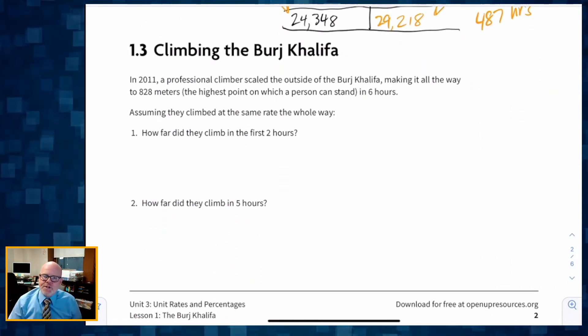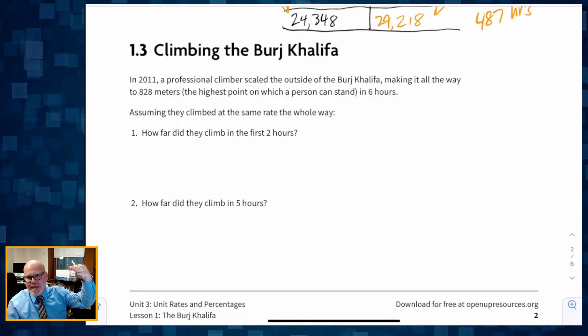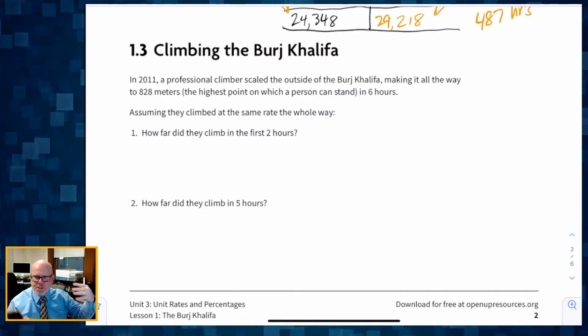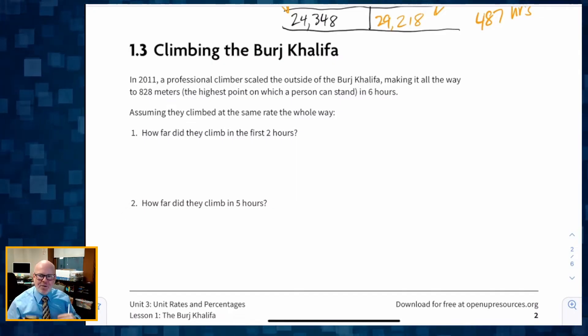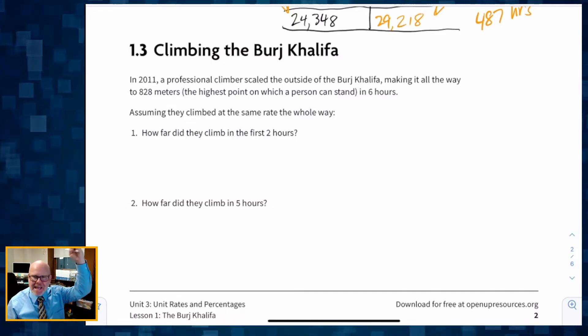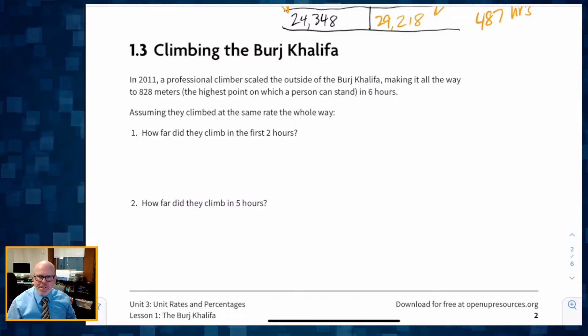Number three, activity three. It says, in 2011, a professional climber scaled the outside of the Burj Khalifa, making it all the way to 828 meters, the highest point on which a person can stand, in six hours. So six hours to climb 828 meters. Assuming they climbed that same rate the whole way, how far did they climb in the first two hours? And then in question two, how far did they climb in five hours? So basically, we're going to make a table.